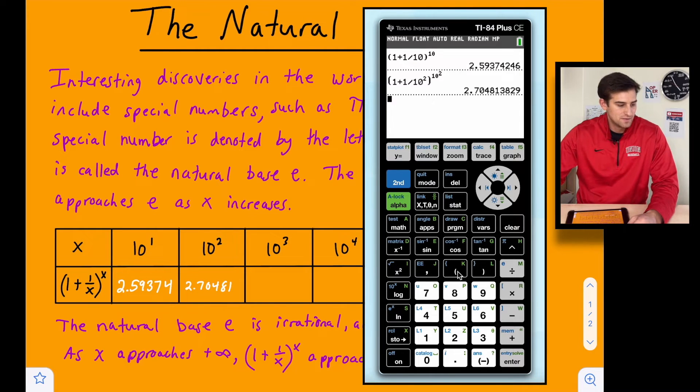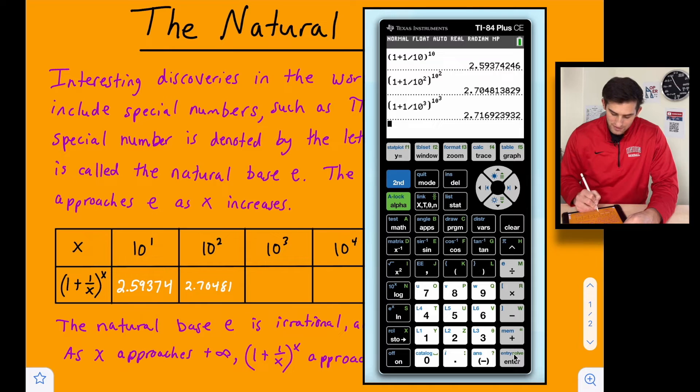All right, now let's go up to 10 cubed. 1 plus 1 divided by 10^3, close the parenthesis there and raise it to a power of 10^3. So here we get 2.71692.